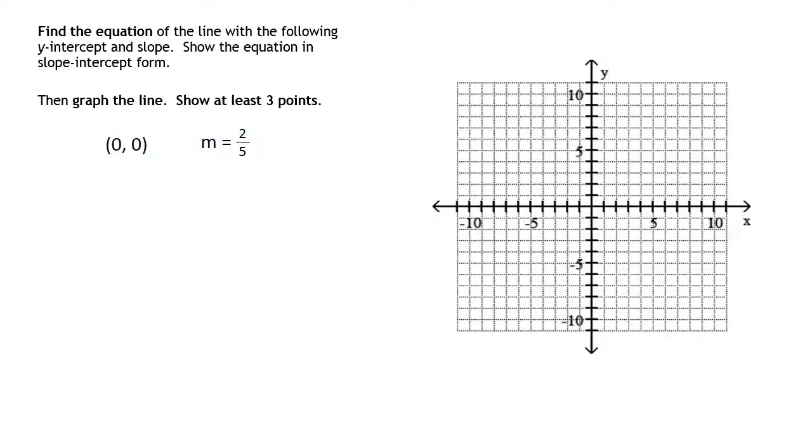Hey guys, in this video we're going to look at three special cases that you might run across when you are in a graphing lesson. The first of these cases is they're giving you a point of (0, 0) and a slope of 2 over 5.